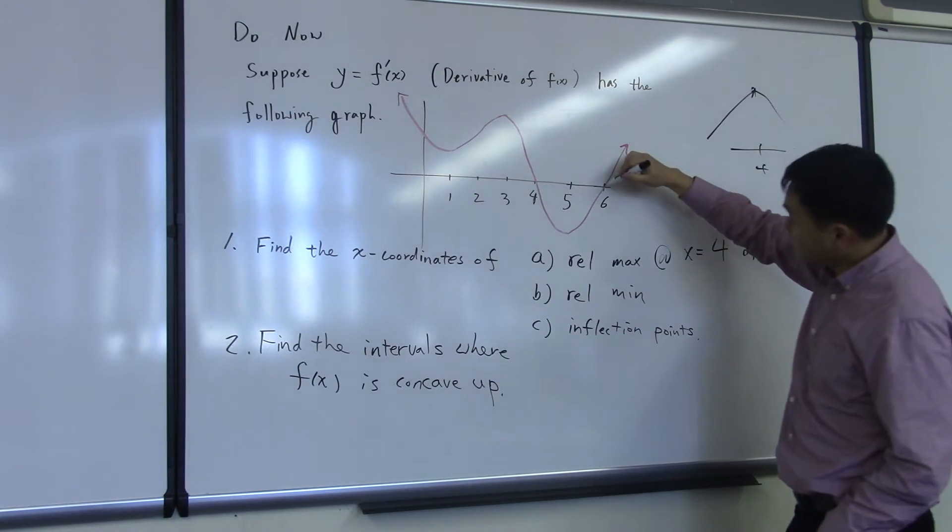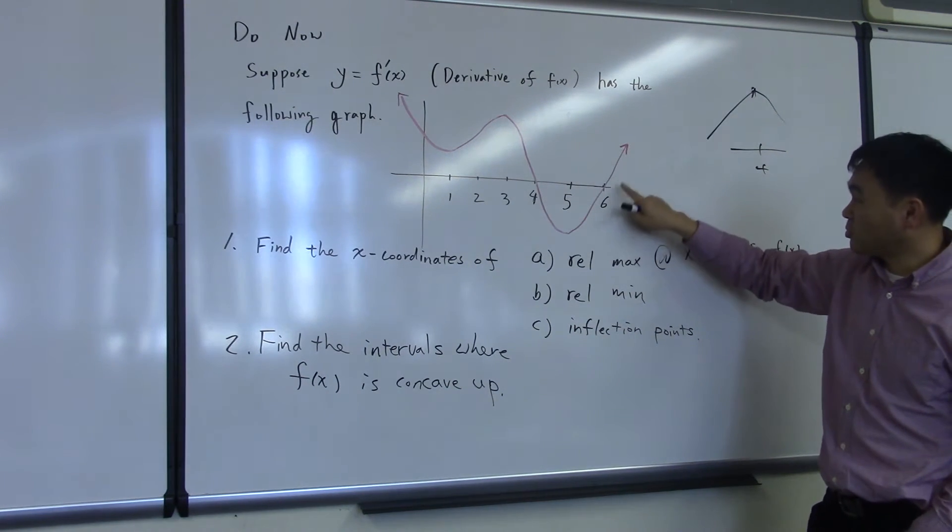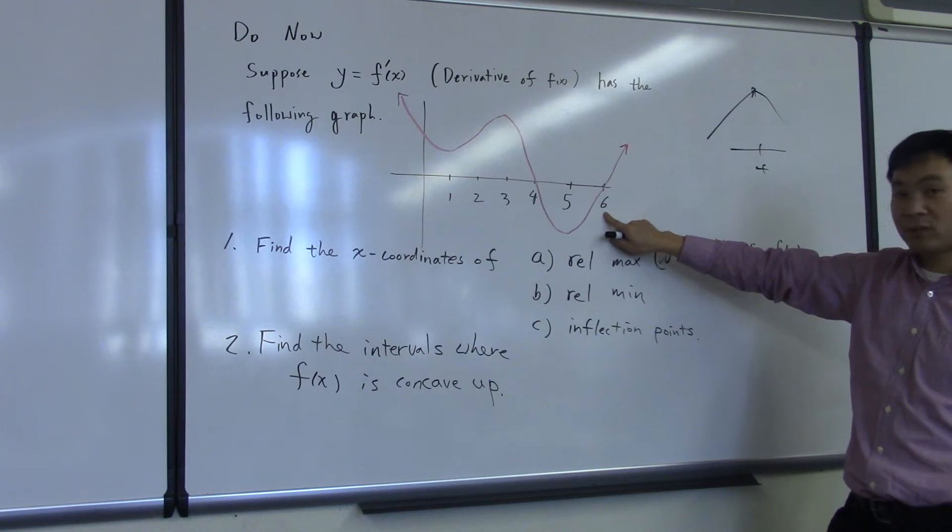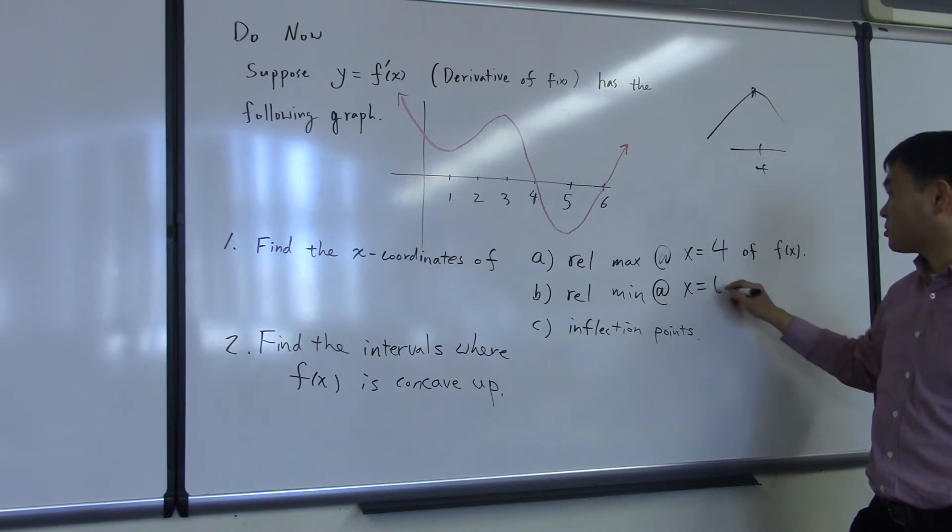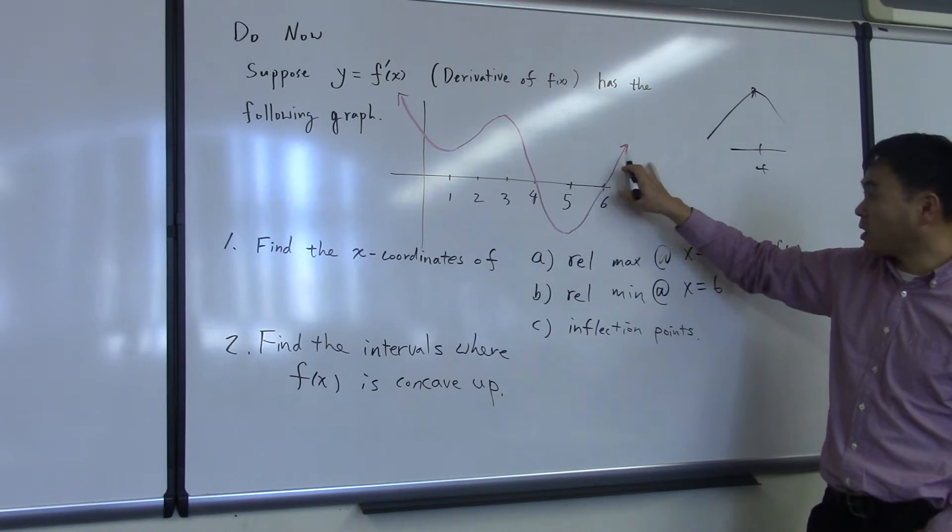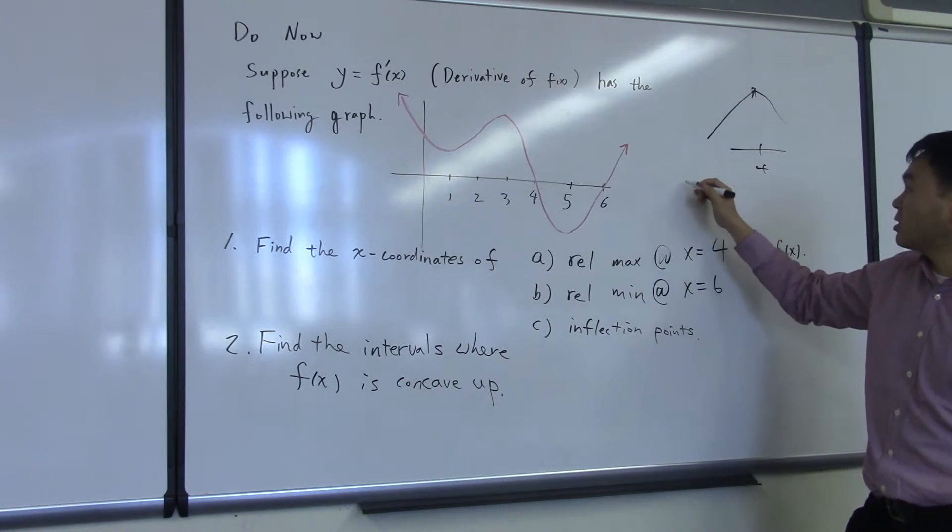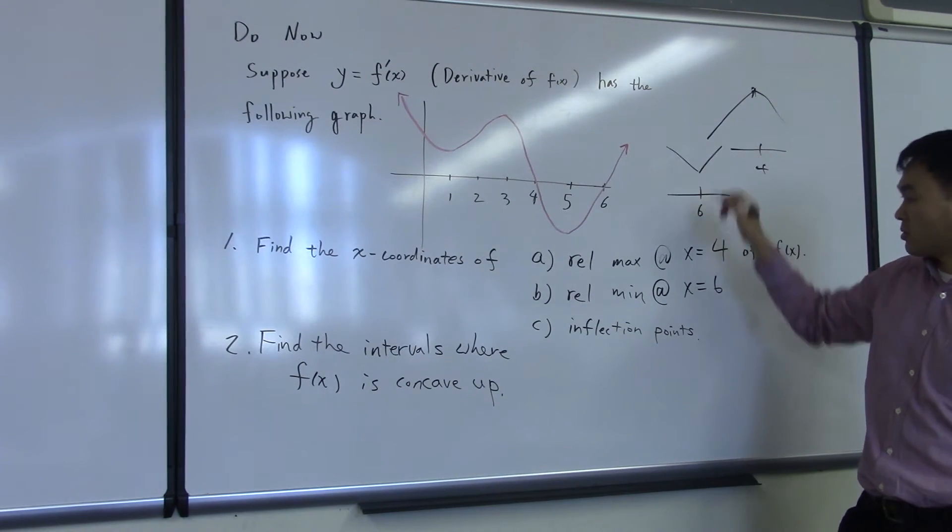And the same kind of logic can be used to show that x equal to 6 will be a relative minimum, because f prime being negative and then positive means that the function before 6 is decreasing and then after 6 it will be increasing.